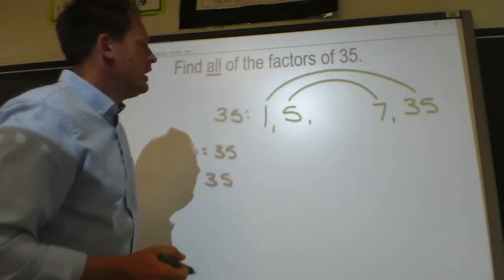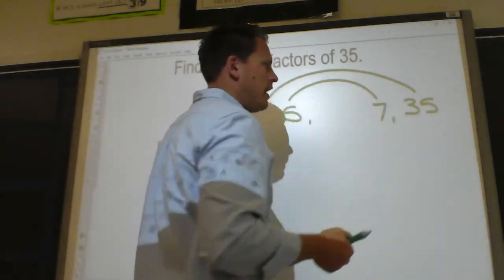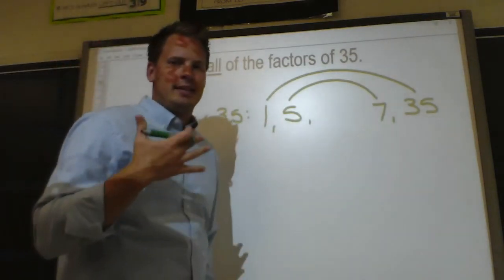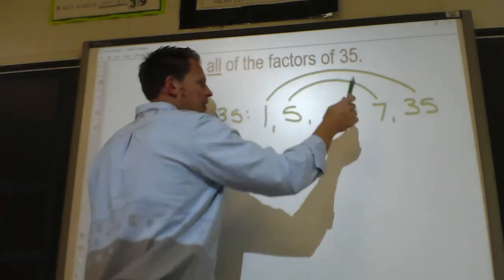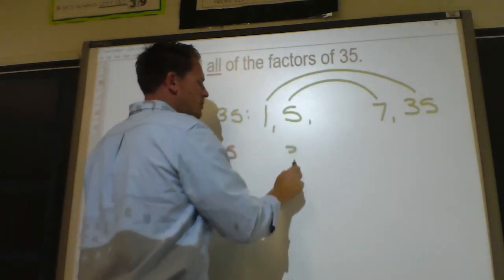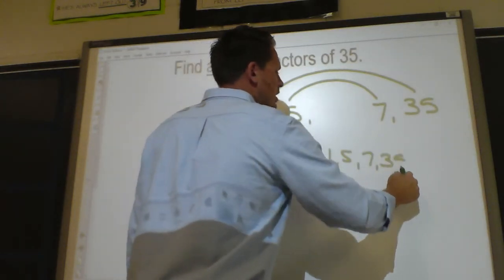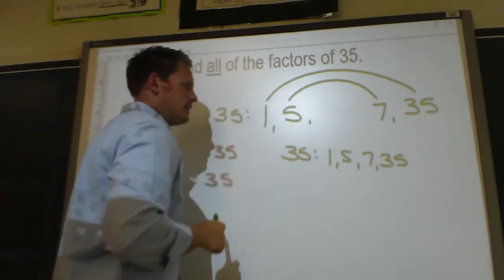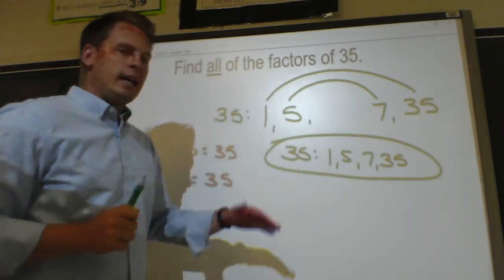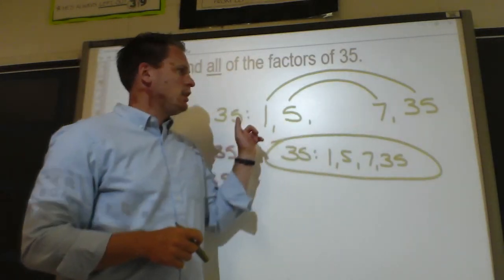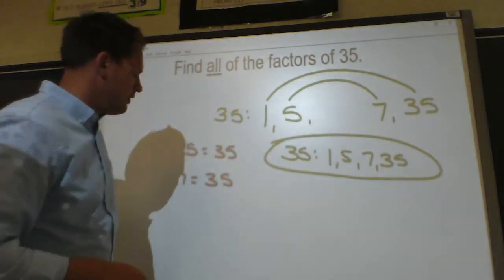After 5, check 6 — 6 times 5 is 30, 6 times 6 is 36, so 6 is not a factor. After 6, check 7 — it's already on the list. We are done. Some numbers have very few factors. The factors of 35 are 1, 5, 7, 35. I know I got all of them because I used my system — the factor rainbow — to check all of those numbers.